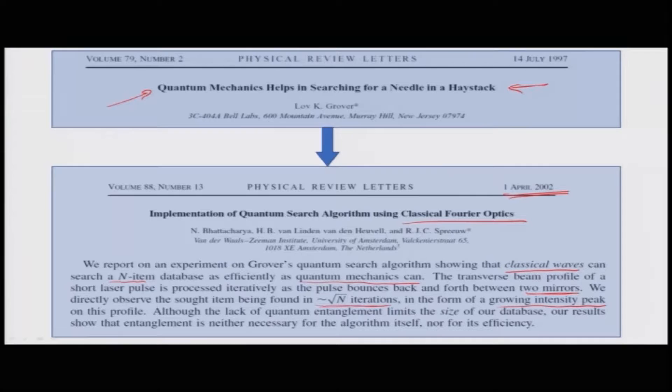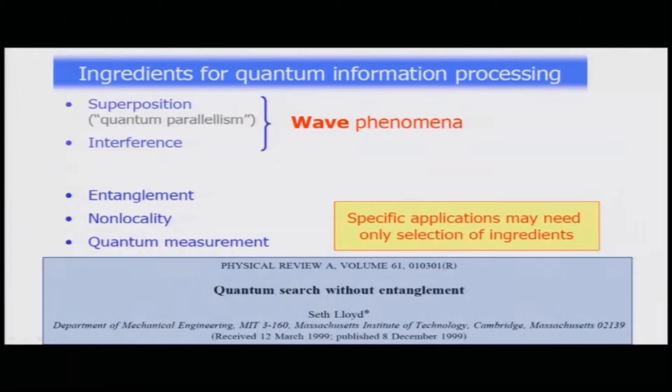However, in this case, as expected due to the lack of quantum entanglement, the size of the database gets limited. The results showed that entanglement is not necessary for the algorithm itself nor for its efficiency, except that the size of the database is something which gets limited as a result of this quantum aspect being missing. But this was a very important demonstration of Grover's algorithm by using classical Fourier optics.